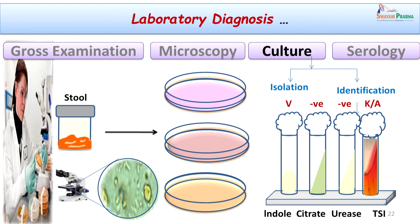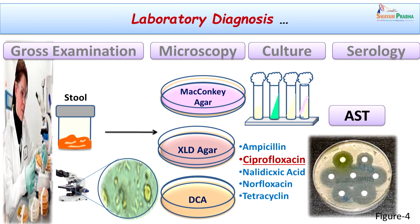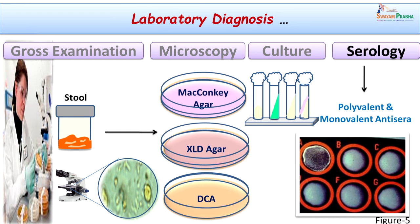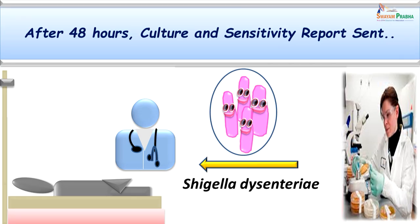We then performed antibiotic sensitivity testing, which is particularly important because Shigella species, while previously sensitive to most antibiotics, are increasingly developing resistance — especially in international travelers. Gowri had been treated with ciprofloxacin, and we were fortunate to confirm the isolate as sensitive. The report was communicated to the physician who continued the same treatment. We also confirmed the identity of the isolate by latex agglutination test, and after 48 hours communicated the organism identity with the antibiotic sensitivity report.